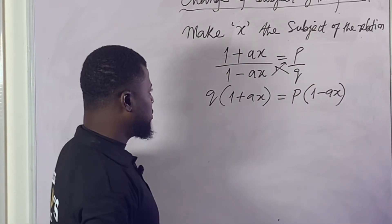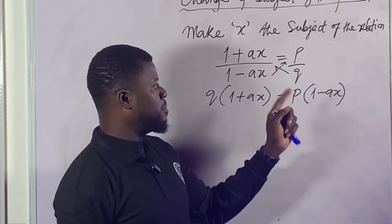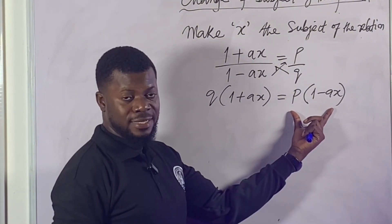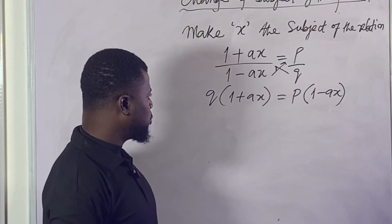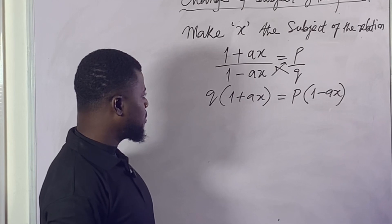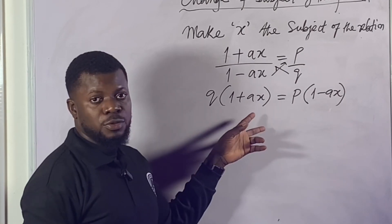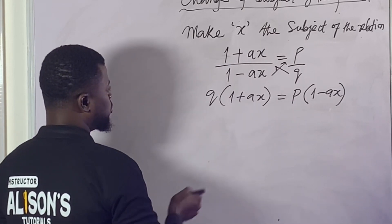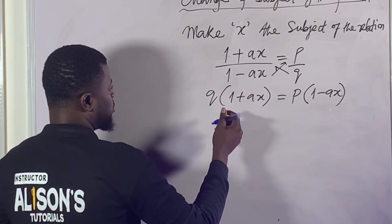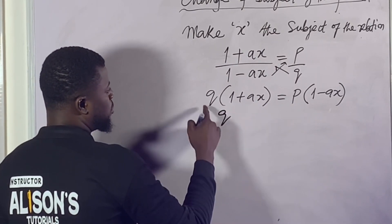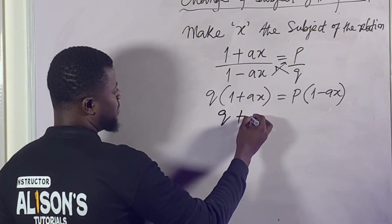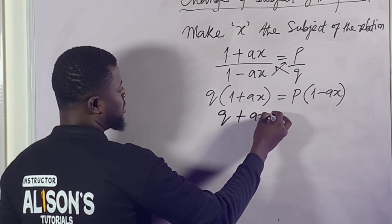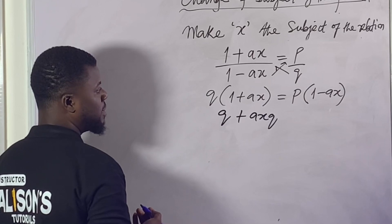It doesn't matter which one comes first. Even if you want to write it the other way, that's fine, but I think it makes sense if you do it like this. So what's the next approach to this problem? We need to distribute. We don't need to think so much — we just need to distribute. So 1 by q, we have q. Q again by ax, we can just do this like this. That makes sense.